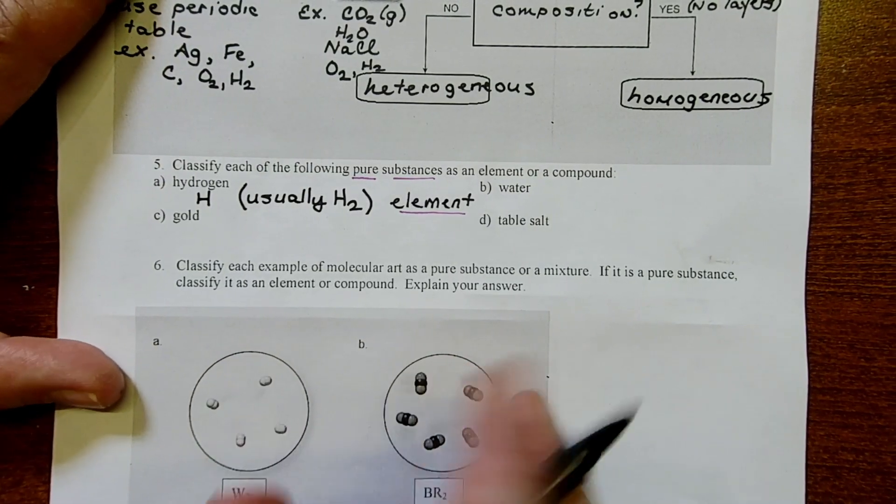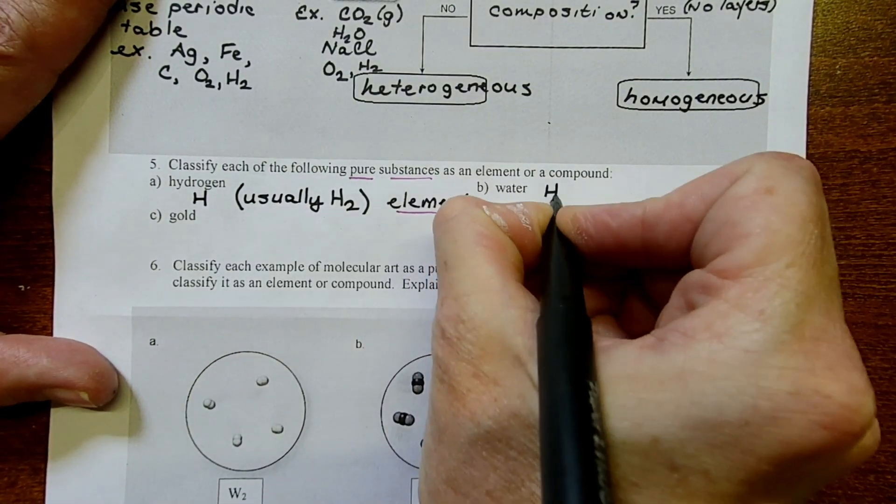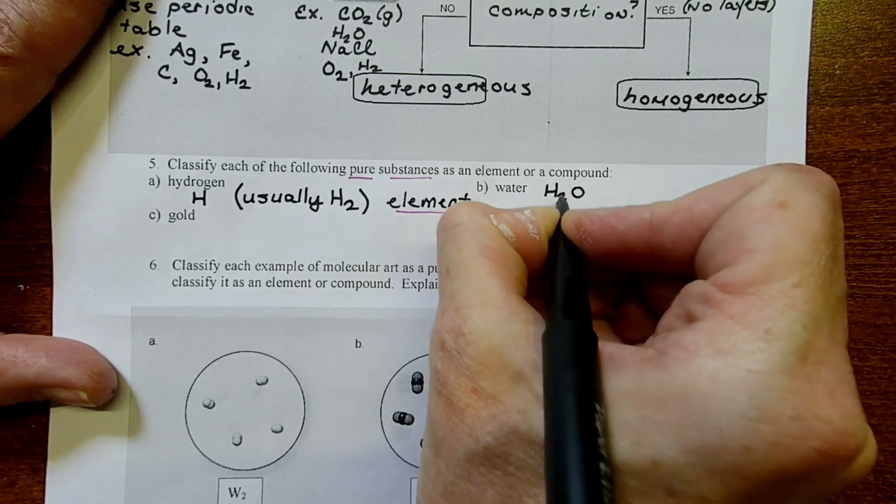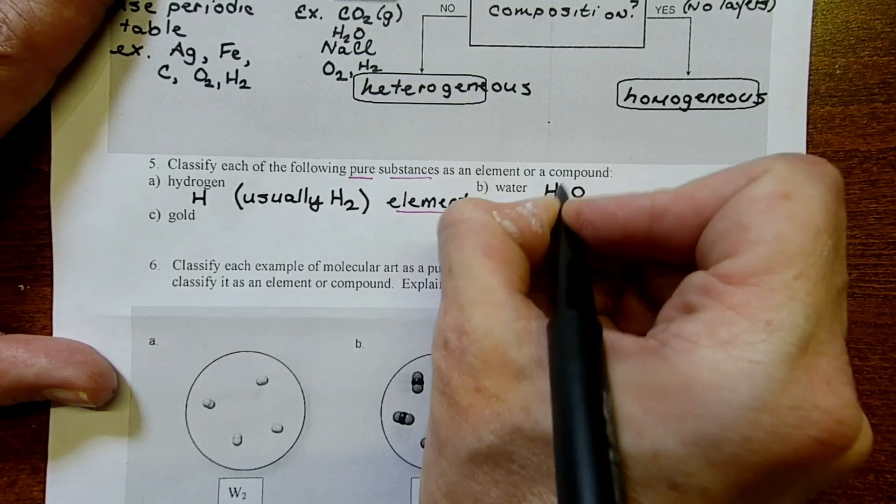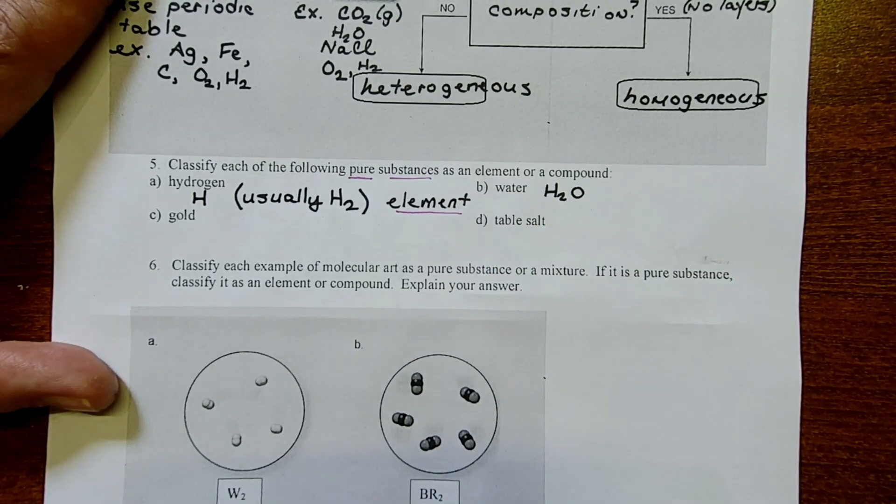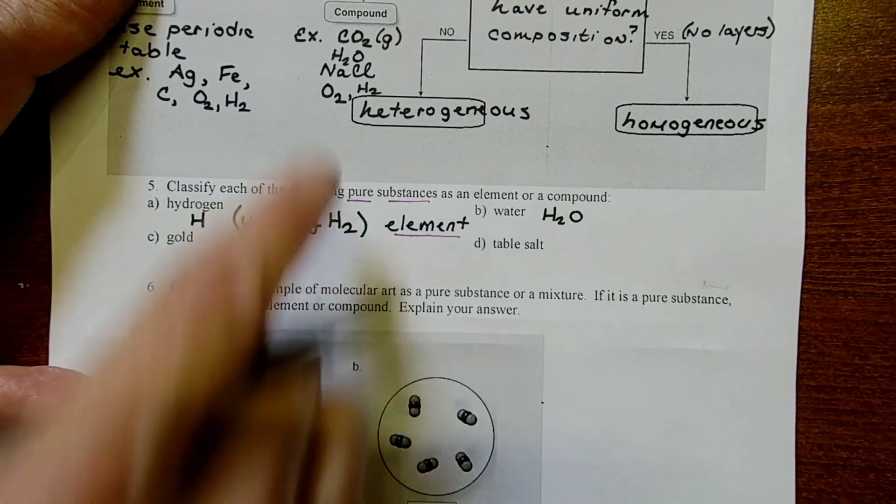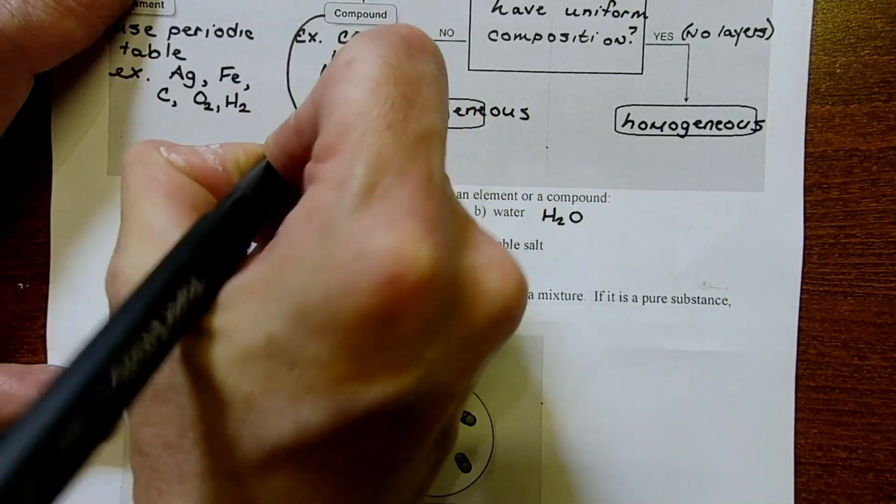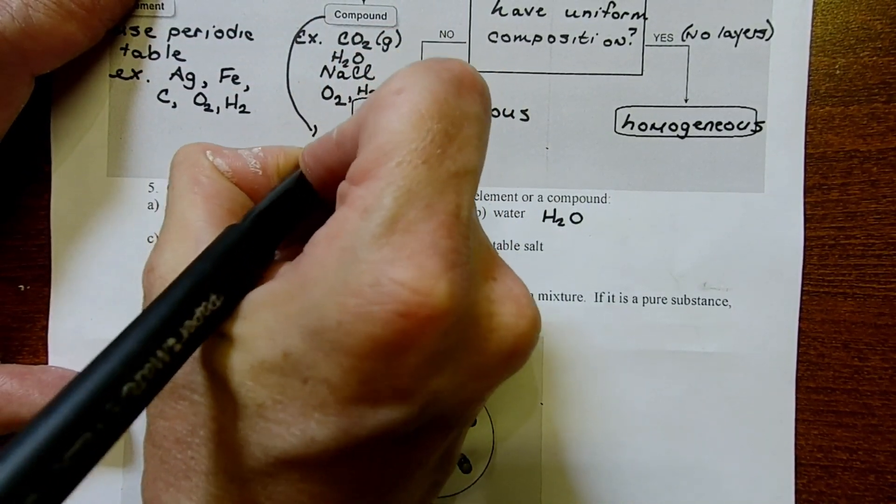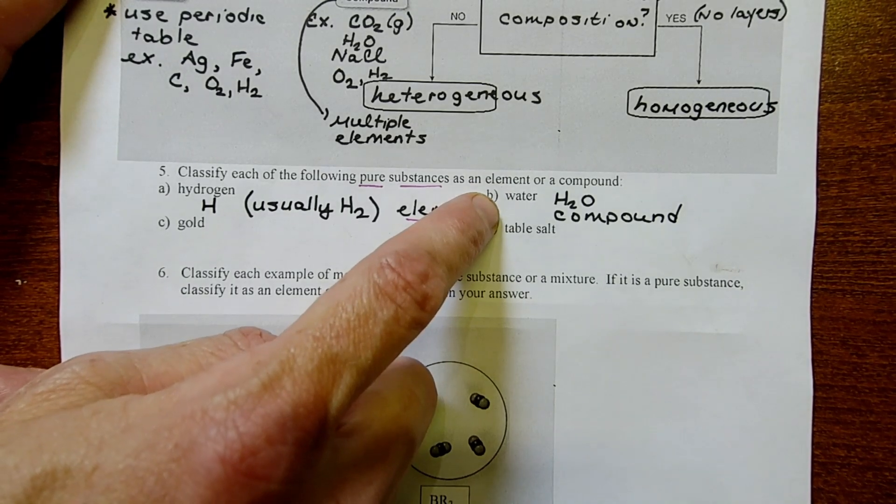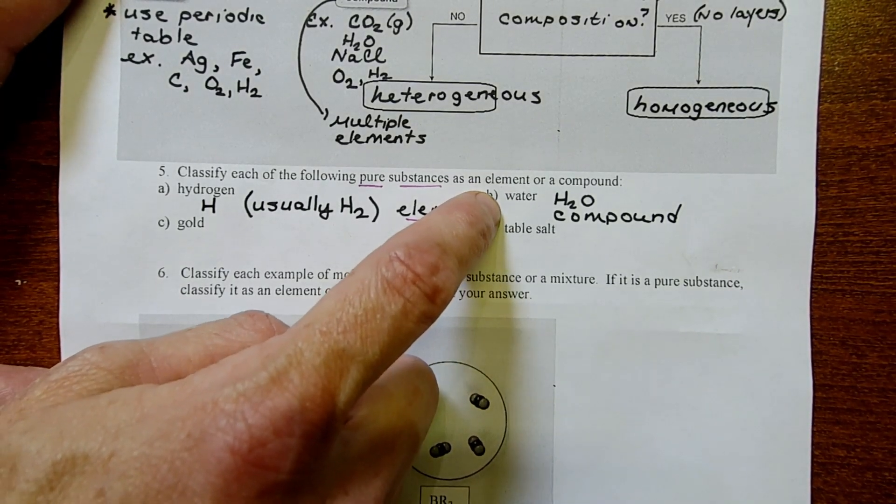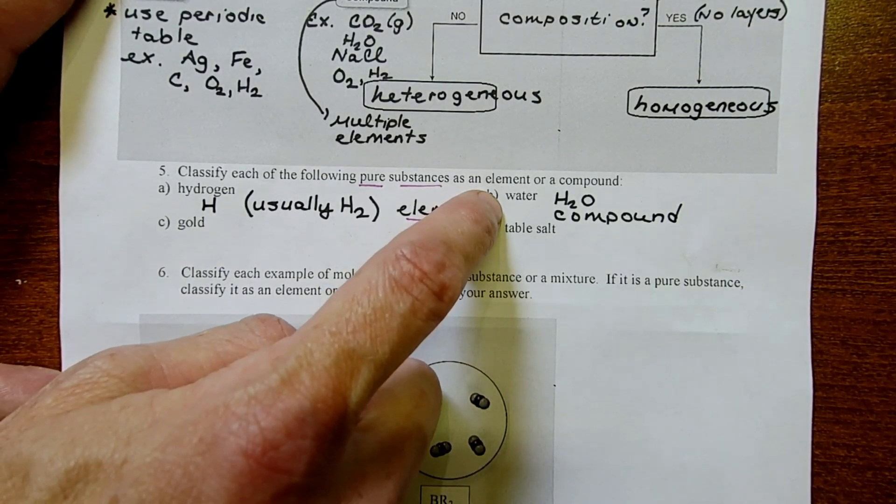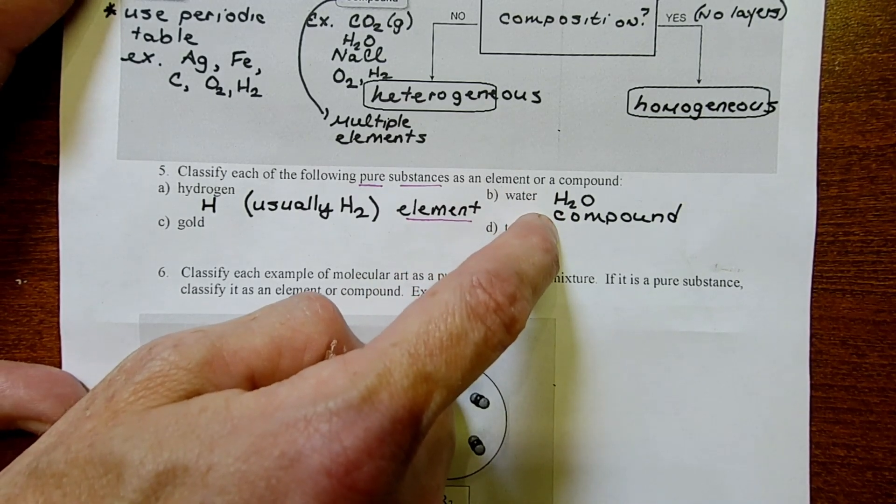Water. The formula for water is H2O. Looking at the fact that it has multiple elements, and maybe I should even write that up here. Compounds have multiple elements. Because water has multiple elements, or it's composed of multiple elements, I'm going to classify it as a compound.